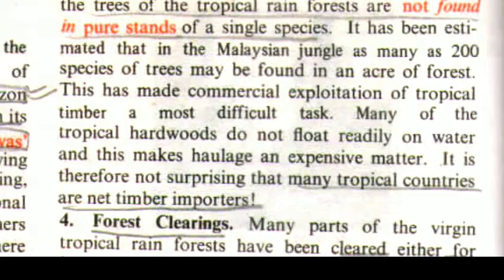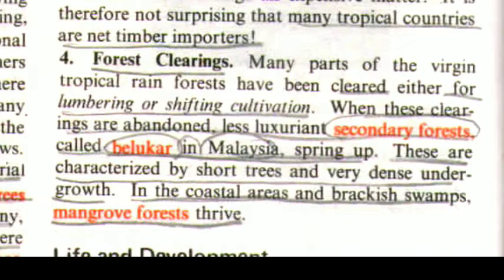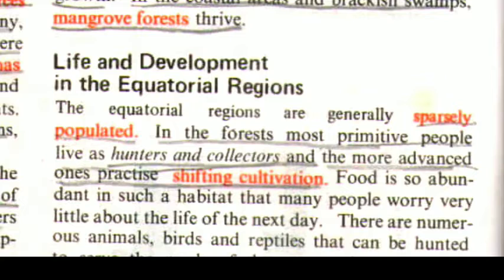It is therefore not surprising that many tropical countries are net timber importers. The fourth characteristic feature is forest clearings. Many parts of the virgin tropical rainforest have been cleared either for lumbering or shifting cultivation. When these clearings are abandoned, less luxuriant secondary forest called belukar in Malaysia springs up, characterized by short trees and very dense undergrowth. In coastal areas, in brackish swamps, mangrove forests thrive.